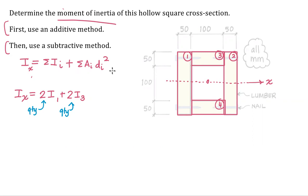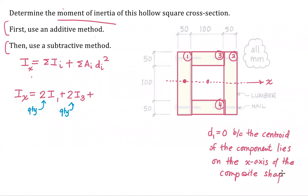And now we're into our area times distance terms. And my distance term for number one D1 is a zero. D1 equals zero. Because the centroid of the component of the composite shape. Whenever this happens, this is a shortcut for you.